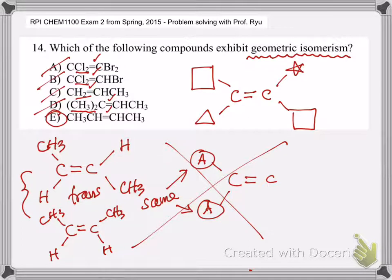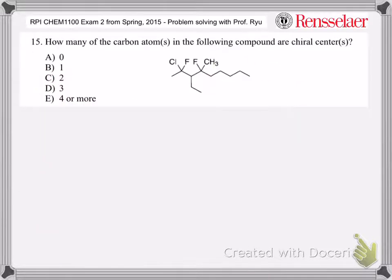In the previous problem we talked about geometric isomer with a double bond. But now we are talking about chiral centers and chiral isomers.